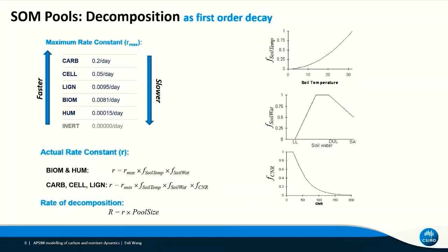In the simulation, the actual rate constant is simulated as the maximum rate modified by a temperature and soil water factor for BOM and HUM pools, and an additional soil C-N ratio factor for the three FOM sub-pools. The actual rate of decomposition is the rate constant multiplied by the size of each pool. The graphs on the right show the responses of decomposition rate to soil temperature on the top, soil water in the middle, and soil C-N ratio at the bottom.